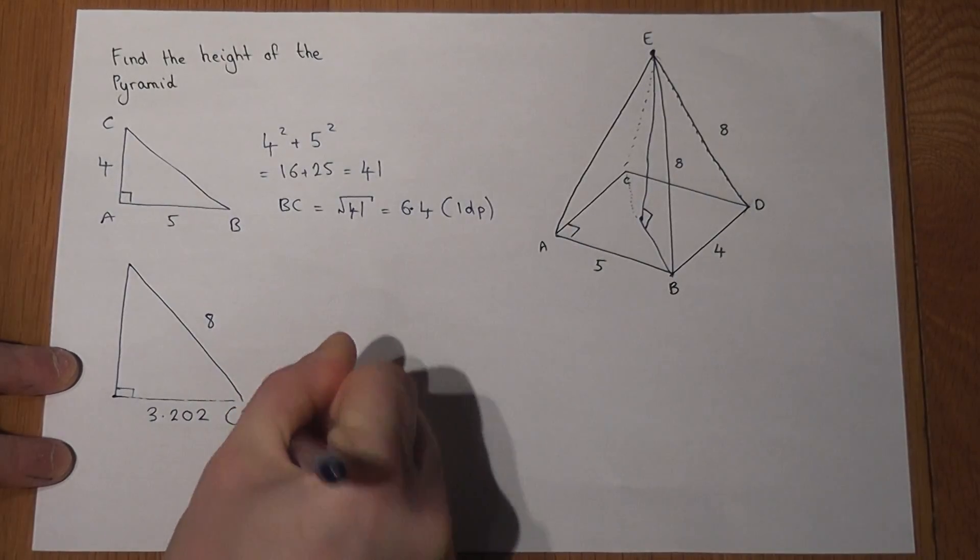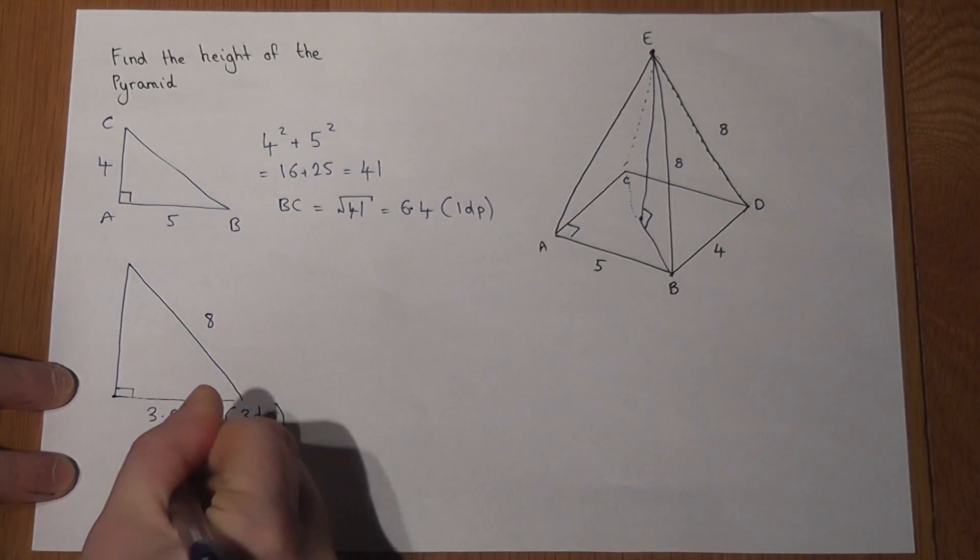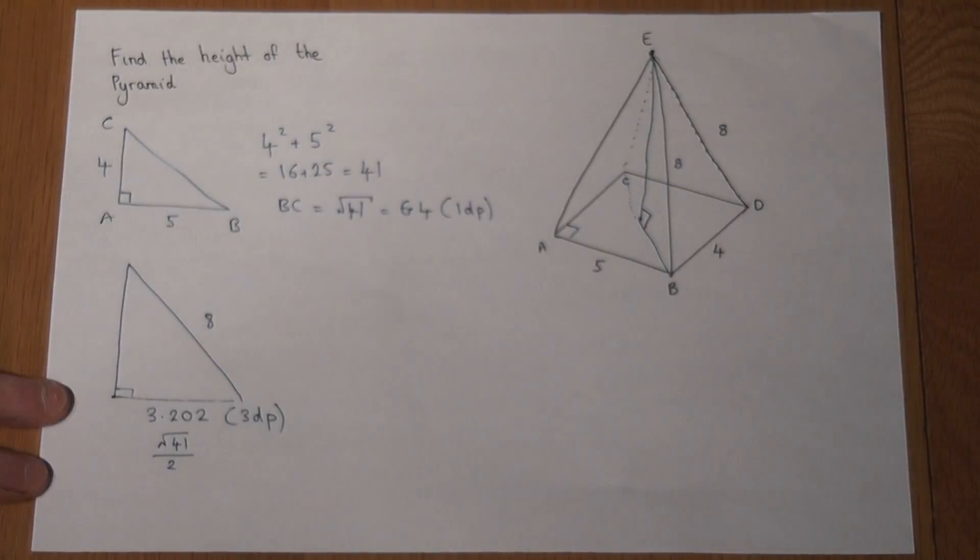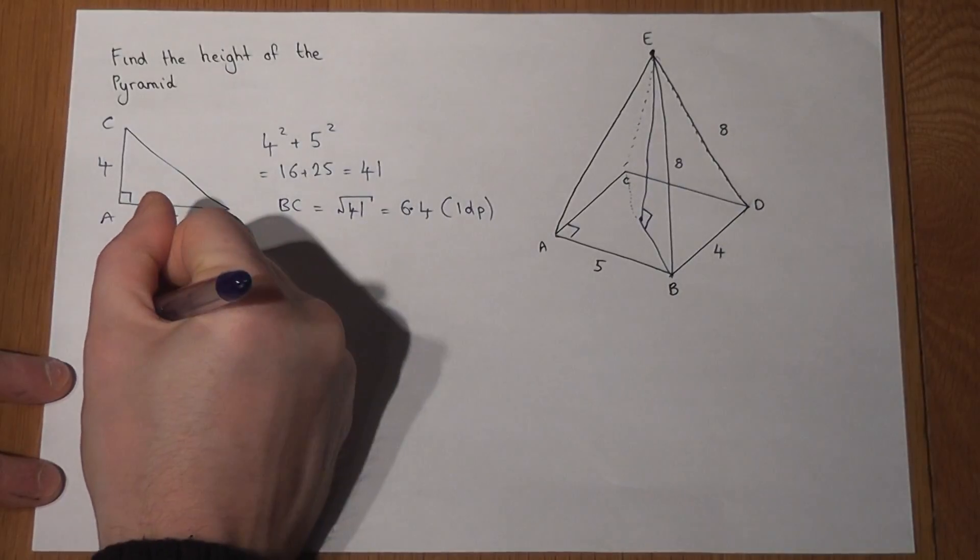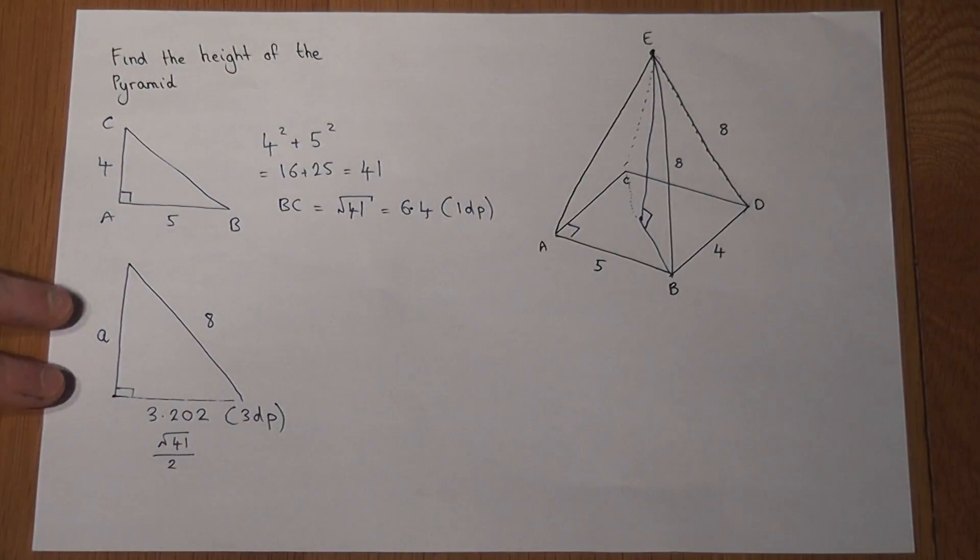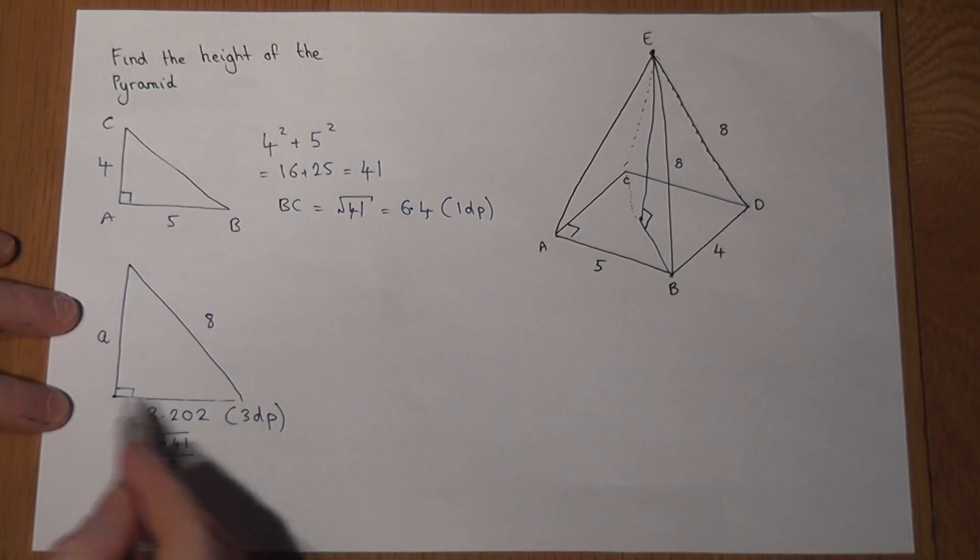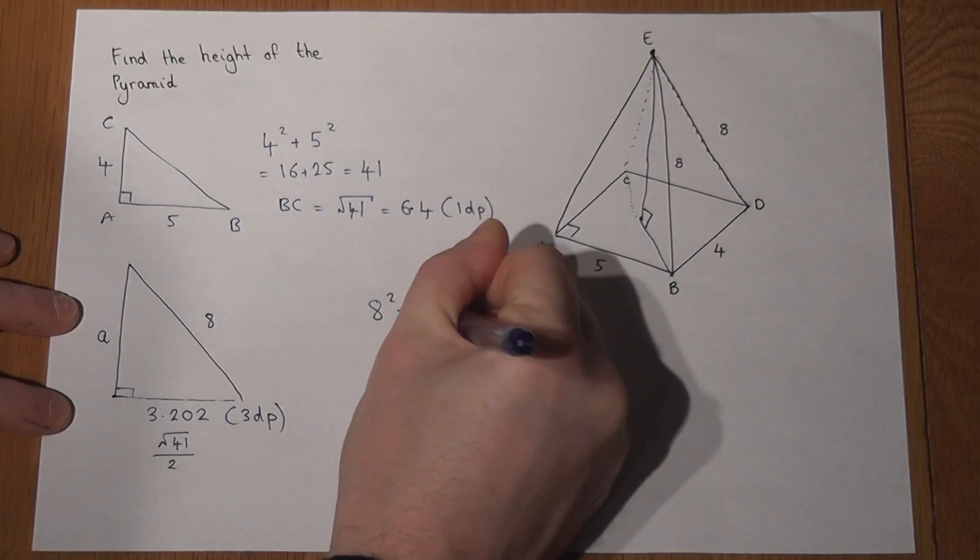It's the square root of 41 over 2, and my question was to find the height, which I'll just call a. So to find a, I'll need to use Pythagoras, but I know the hypotenuse. So to find a, it'll be h squared minus that length there squared.